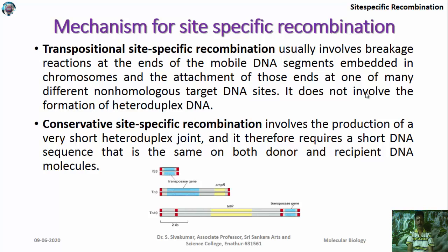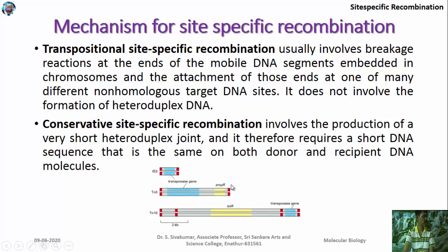Examples include IS3 (insertion sequence 3), transposon Tn3, and transposon Tn10. The colored regions indicate they contain the enzyme transposase — the enzyme required for transport of the fragment. In addition to transposase, they may also have resistance sequences. For example, an ampicillin resistance sequence is present in Tn3, and a tetracycline resistance gene is present in Tn10.